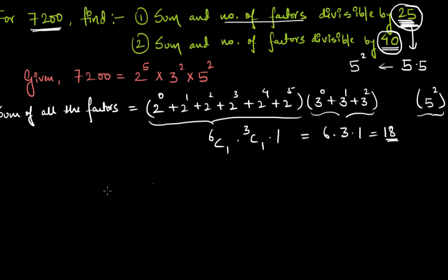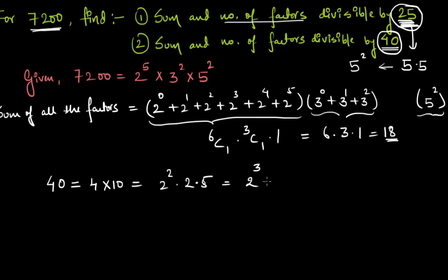Now for 40: we can write 40 = 4 × 10 = 2^2 × 2 × 5 = 2^3 × 5. So the prime factorization of 40 is 2^3 × 5. To get a factor divisible by 40, we need at least three 2s and one 5.